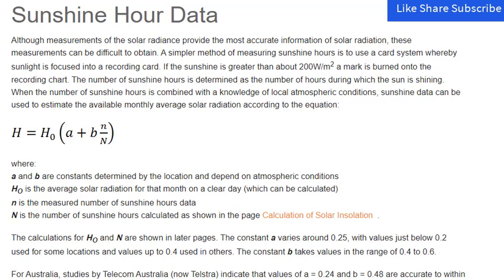N is the measured number of sunshine hours data, and N is the number of sunshine hours calculated as shown in the page on calculation of solar insolation.